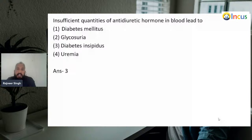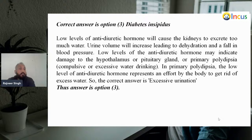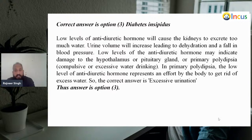Next: insufficient quantities of antidiuretic hormone ADH in the blood leads to what? Diabetes mellitus, glycosuria, diabetes insipidus, or uremia? Answer: diabetes insipidus. Low levels of ADH will cause the kidneys to excrete too much water, increasing urine volume and leading to dehydration and a fall in blood pressure. Low levels of ADH may indicate damage to the hypothalamus or pituitary glands, or primary polydipsia — compulsive and excessive water drinking. The correct answer is diabetes insipidus, characterized by excessive urination.